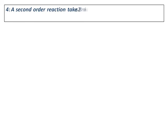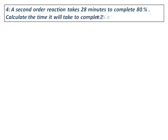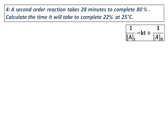A second-order reaction takes 28 minutes to complete 80%. Calculate the time it will take to complete 22% at 25 degrees Celsius. The key is understanding the wording: a time is given for 80% completion, and we need to calculate the time for 22% completion. Since it is a second-order reaction, use the second-order rate law. First, get the value of k, then substitute it to calculate the time for 22% completion.